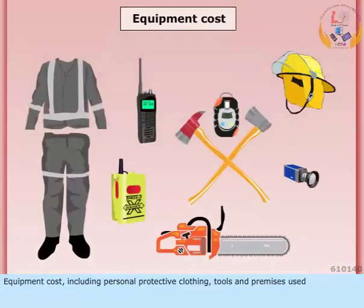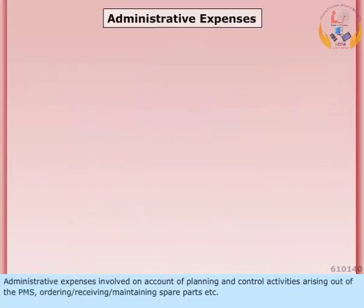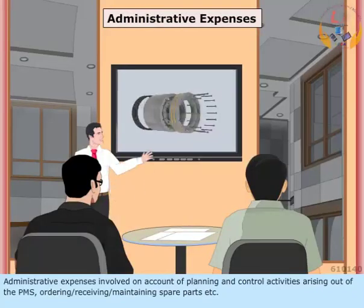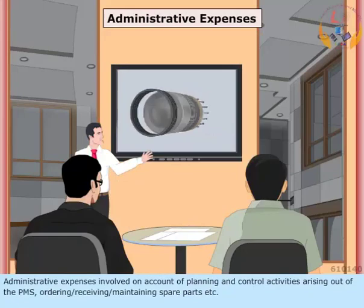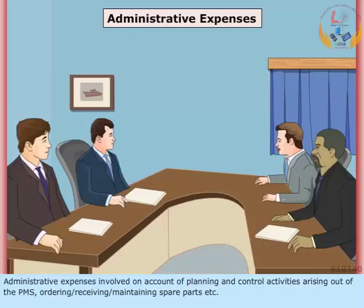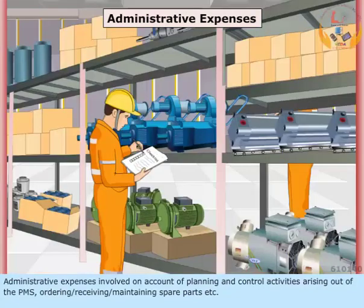Further direct costs include equipment cost, including personal protective clothing, tools, and premises used. Also included are administrative expenses involved in planning and control activities arising out of the PMS, such as ordering, receiving, or maintaining spare parts.